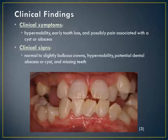In the clinical findings, the patient will often report hypermobility, early tooth loss, and possibly pain associated with a cyst or abscess. The signs include normal to slightly bulbous crowns, hypermobility, potential dental abscess or cyst, and missing teeth in the patient's mouth.